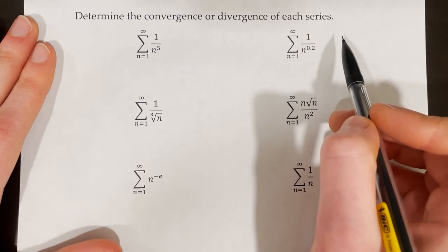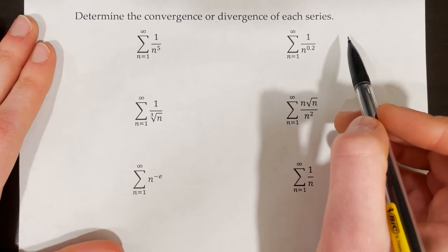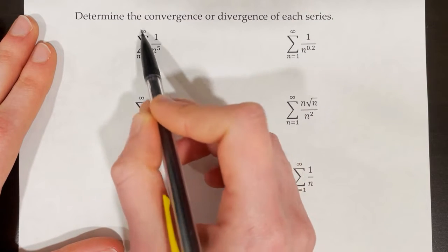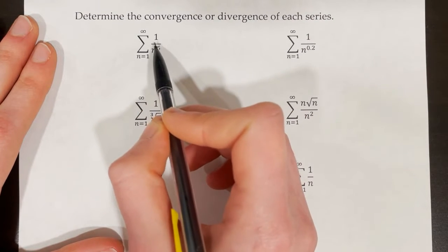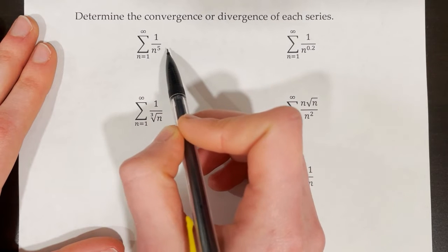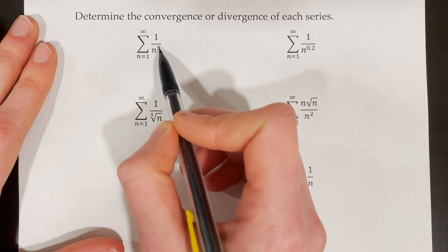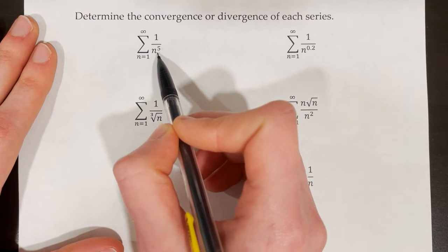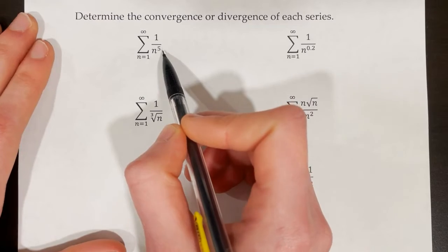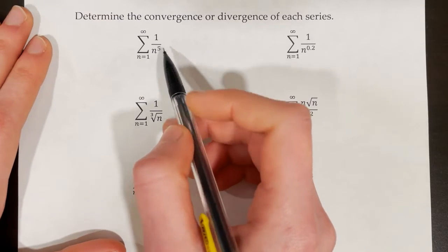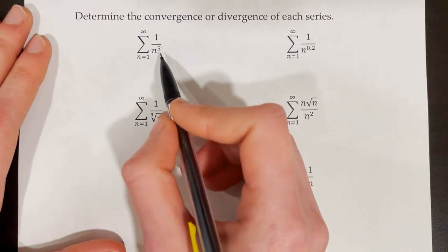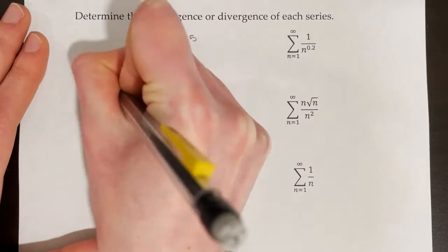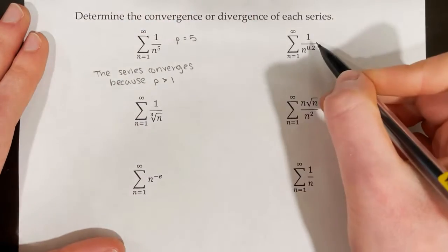Determine the convergence or divergence of each series. In this first one, we're looking at the series from n equals 1 to infinity of 1 over n to the power of 0.2. In this example, p is equal to 0.2. Since 0.2 is less than or equal to 1, this means that our series diverges.